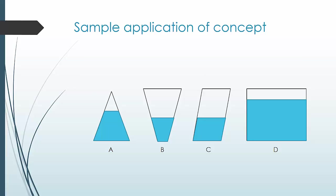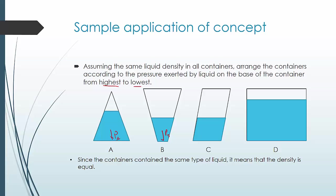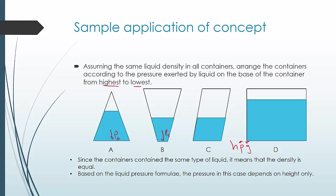Application: assuming all containers hold the same liquid with equal density, arrange the containers by pressure on the base from highest to lowest. Since density is the same, pressure depends only on height. The container with the greatest height has the greatest pressure. The answer, from highest to lowest, is: highest first, then A, then B which equals C. Pressure depends only on height, not on the shape of the container.